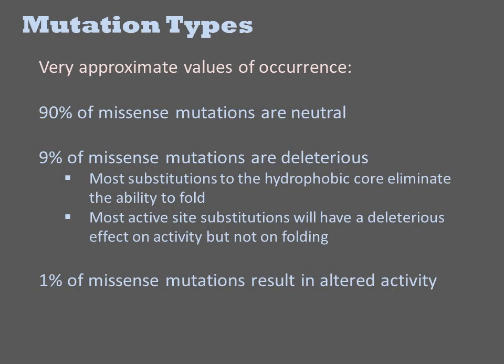When you introduce mutations into a protein coding sequence, the effect of the mutation on activity can be neutral, deleterious, or enabling. The extreme majority of amino acid substitutions have no effect on function — they are the same as wild type, and thus we call them neutral. That is around 90% of mutants.